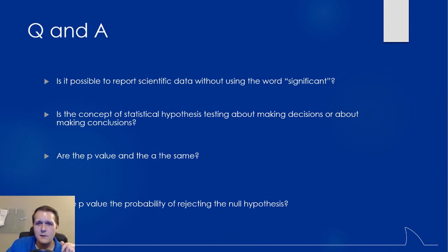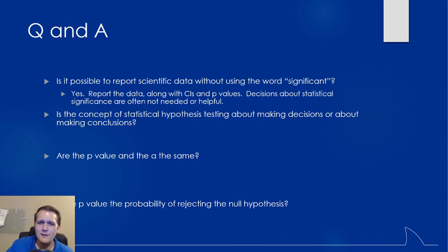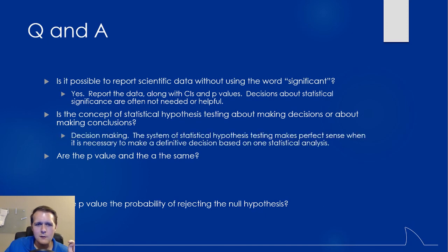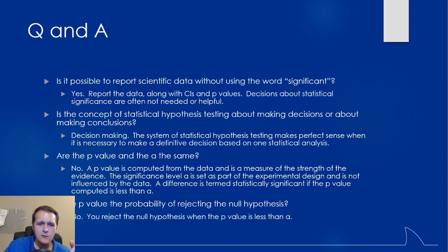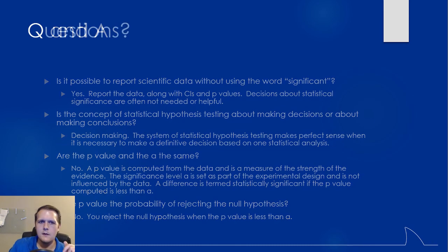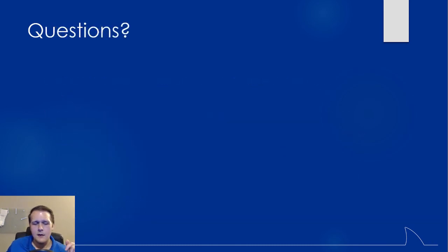Is it possible to report scientific data without using the word significant? Yes — you can just look at confidence intervals and p-values. Is statistical hypothesis testing about making decisions or conclusions? It's about decision-making — deciding whether we think we can throw out the null hypothesis or not, then interpreting based on that. Are p-value and alpha the same? No — the p-value is used to see if we get past our alpha, normally set at 0.05. Is the p-value the probability of rejecting the null hypothesis? No — you reject the null hypothesis when p is less than alpha. That's it for this section. If you have any questions, please let me know and I'll see you in class next time. Thanks a lot, bye.